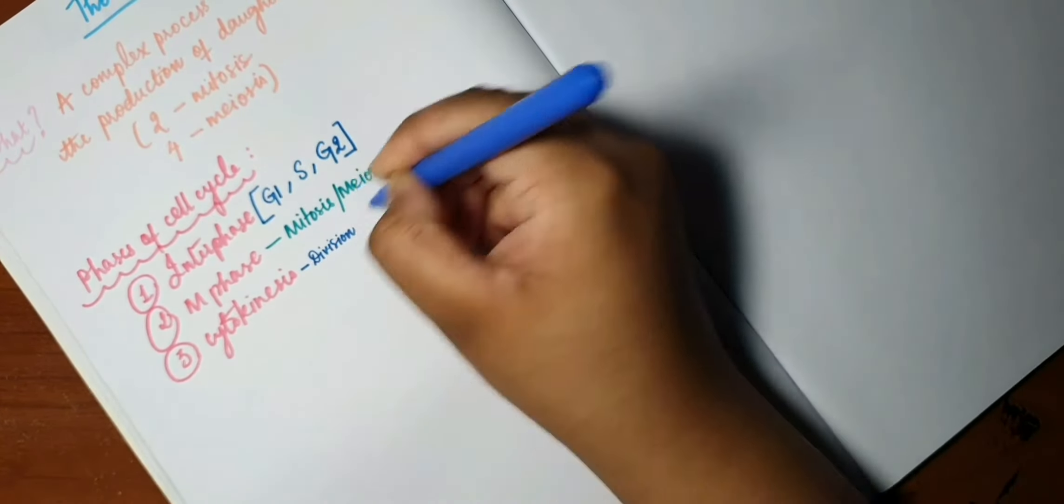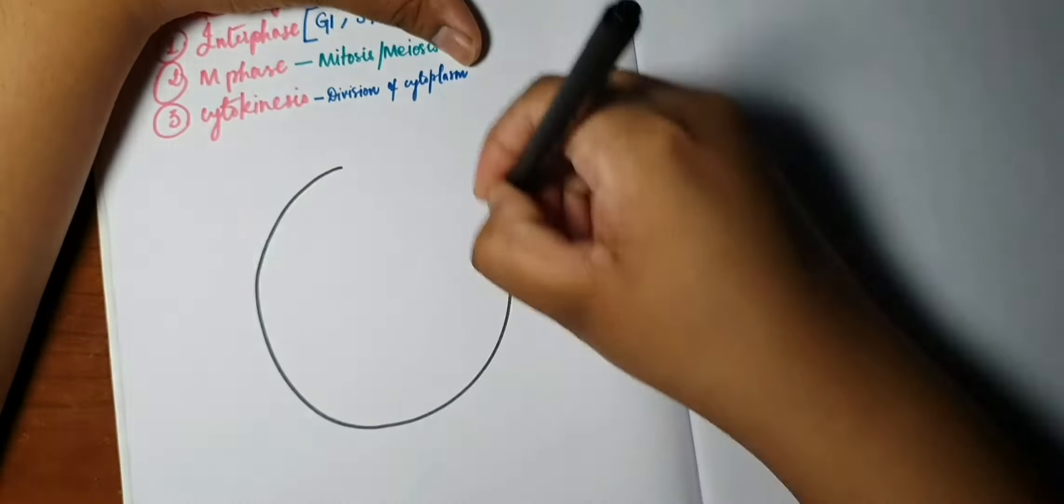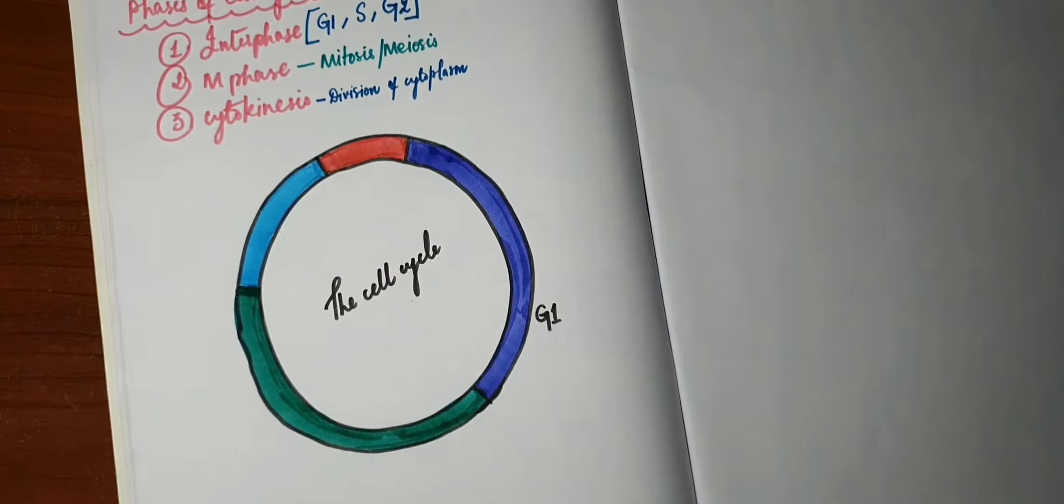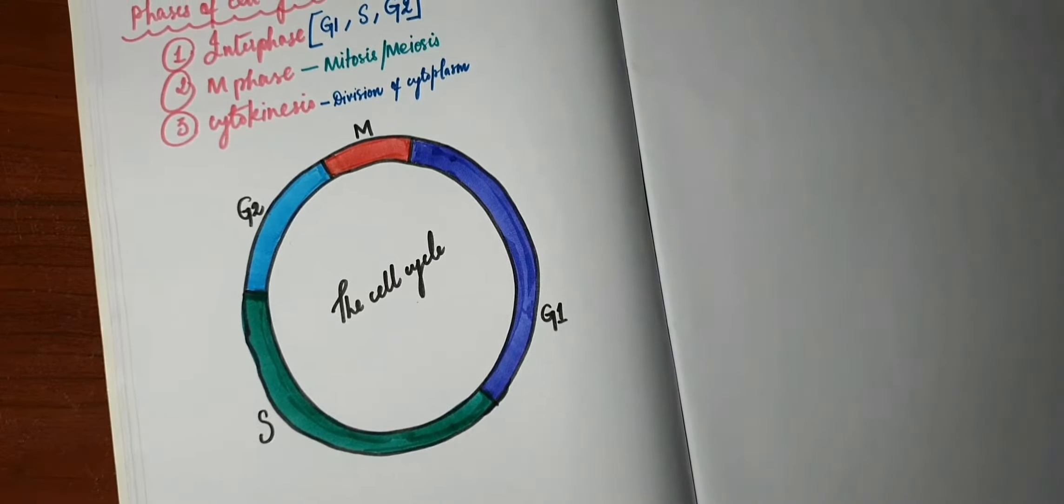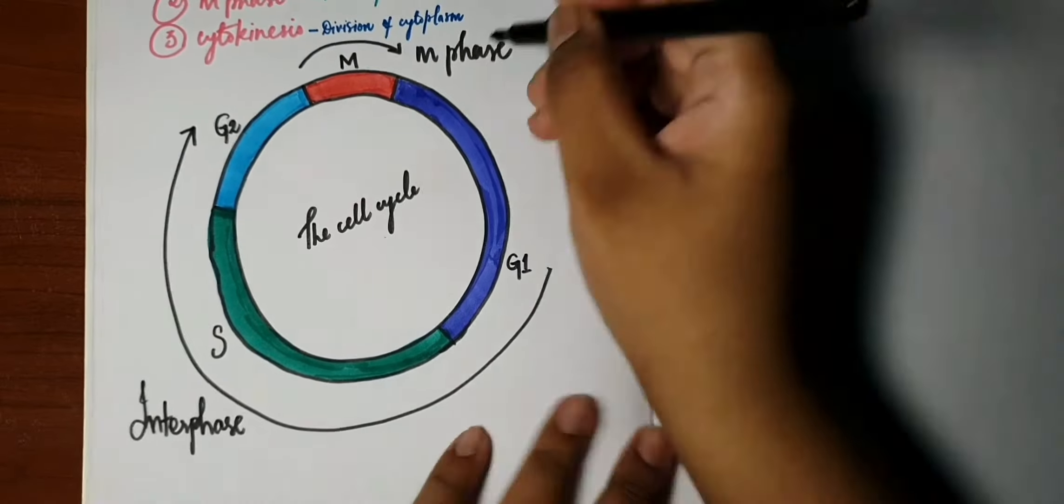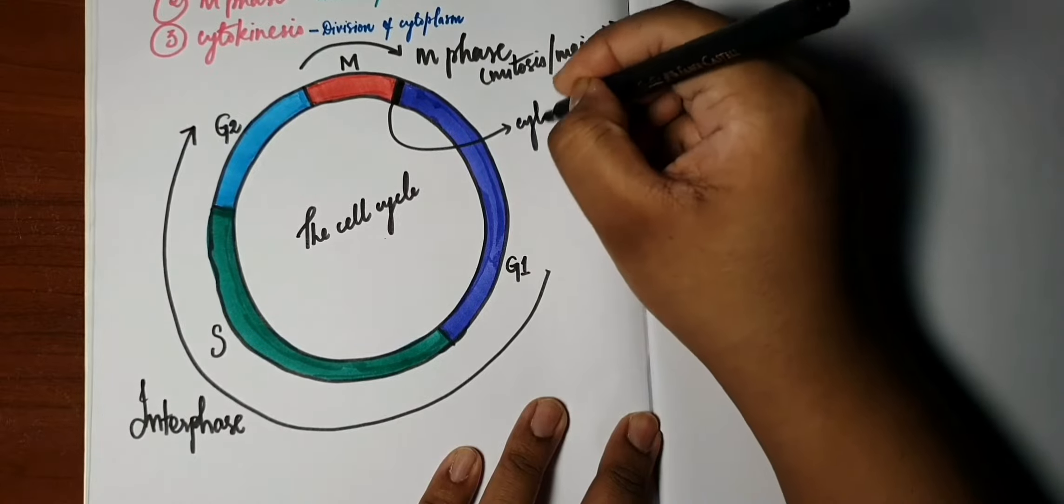The interphase is made up of three phases: G1, S, and G2. Cytokinesis is division of the cytoplasm to form daughter cells. So we have G1, S, G2, and M. G1, S, and G2 are the interphase. M is the M phase, which is mitosis or meiosis, followed by cytokinesis.